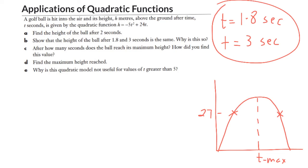So to find that, we need to find our average of 1.8 and 3, which is 4.8 over 2. Add those two numbers together and halve them, which is 2.4 seconds. Which is halfway between the first time it reaches 27 meters, and the second time it reaches 27 meters. That's how we find that maximum height.